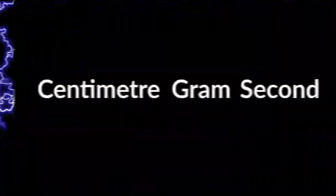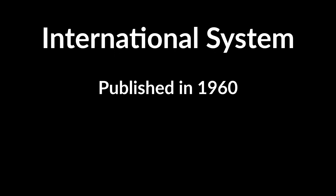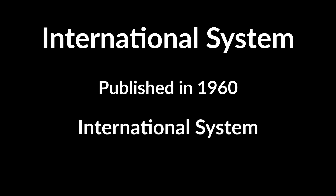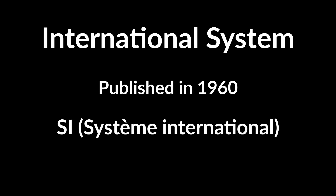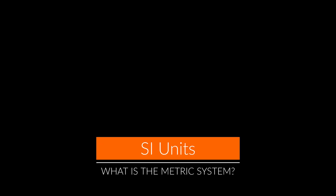With more electricity entering the world of engineering, they looked to add standards for electrical units. So in 1889 they superseded the CGS system with the MKS system — the meter, kilogram, second system — which would eventually evolve into the International System, published in 1960. The name of this International System is, very uncreatively, 'International System,' or SI from the French 'Système International.' Most people in the English-speaking world refer to it as the metric system.